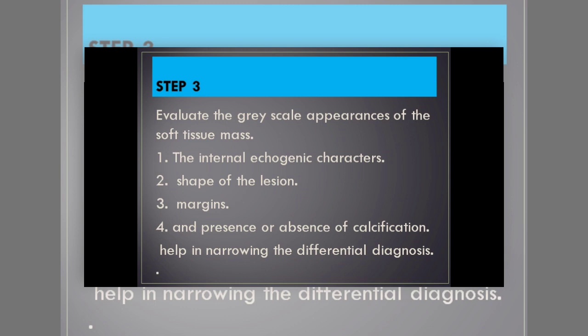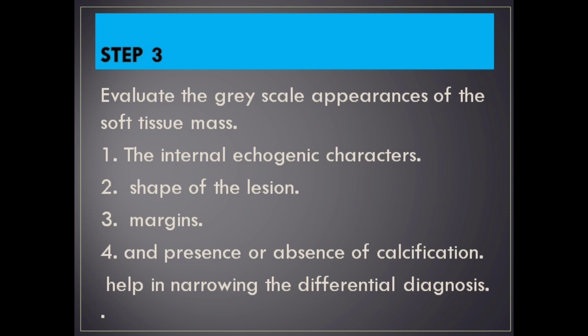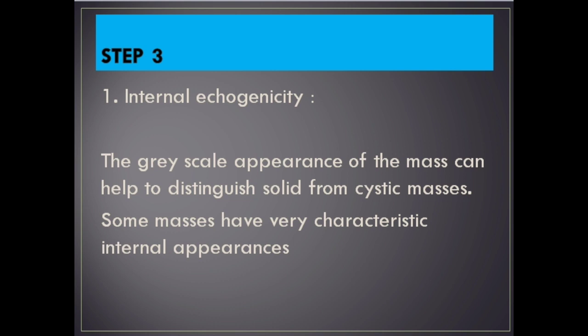Step 3. Evaluate the grayscale appearances of the soft tissue mass: 1) the internal echogenic characters, 2) shape of the lesion, 3) margins, and 4) presence or absence of calcification — all help in narrowing the differential diagnosis. Regarding internal echogenicity, the grayscale appearance of the mass can help to distinguish solid from cystic masses, and some masses have very characteristic internal appearances.